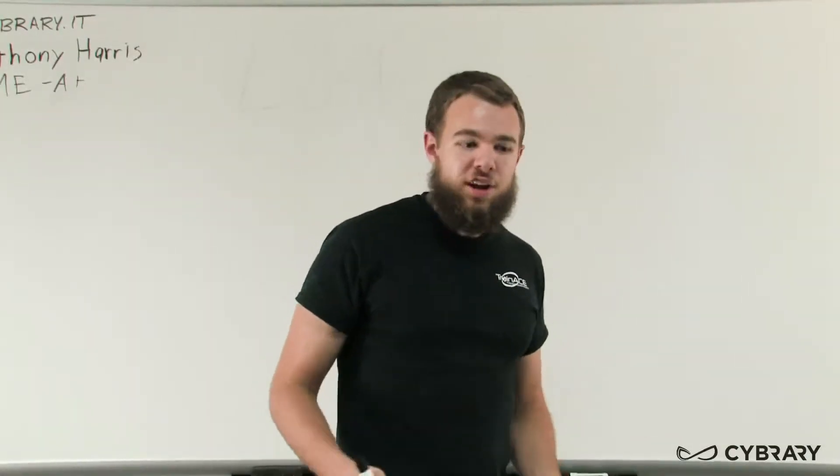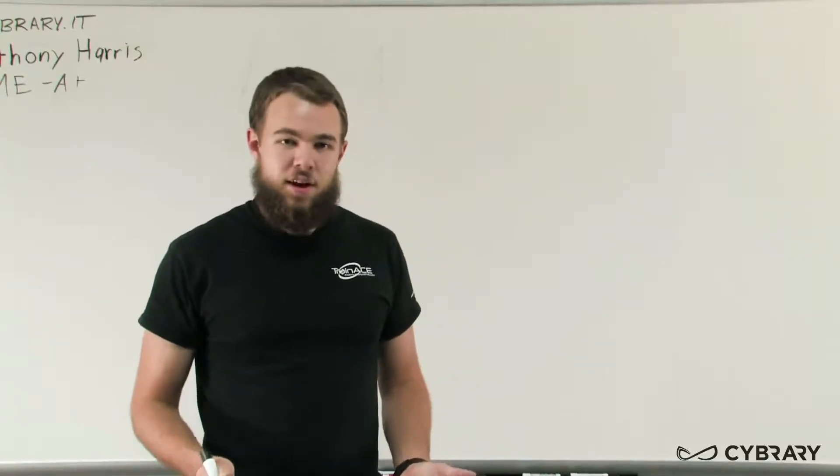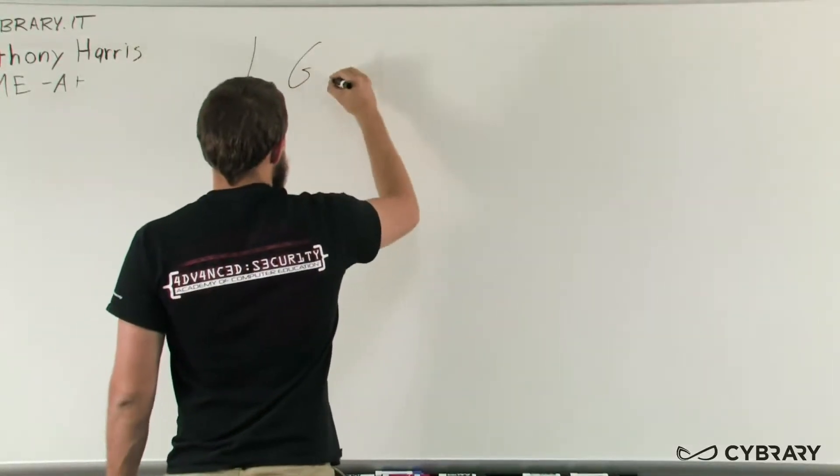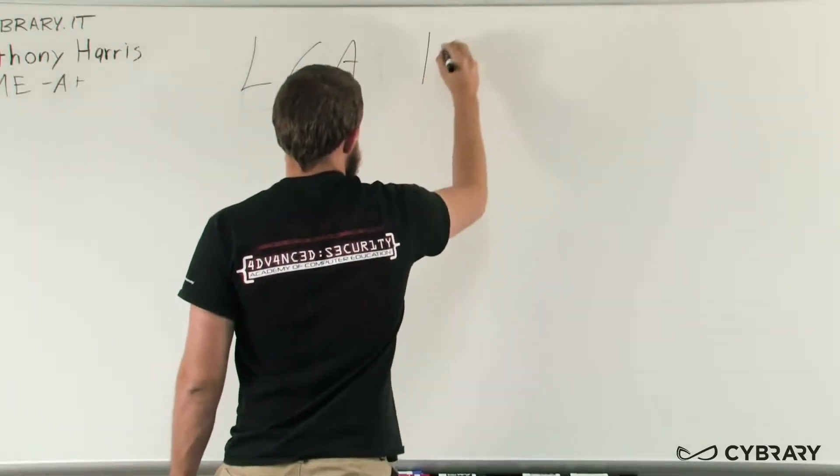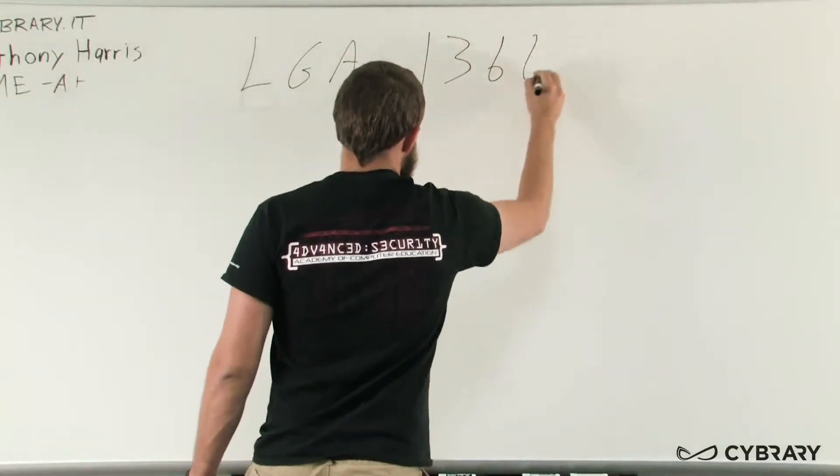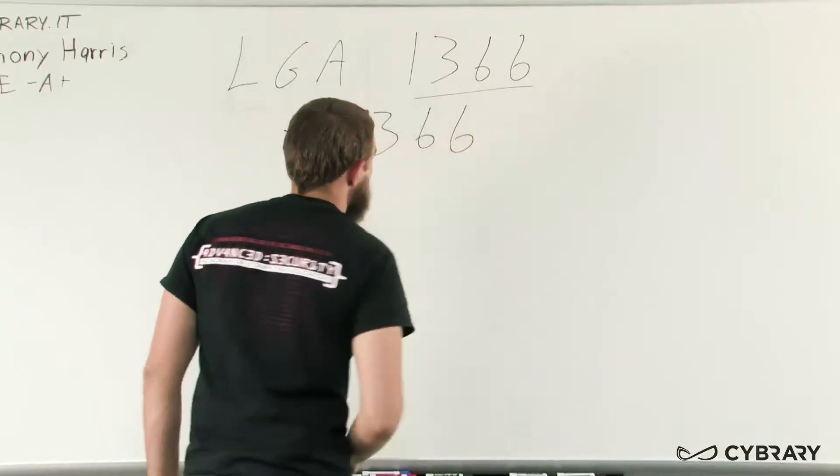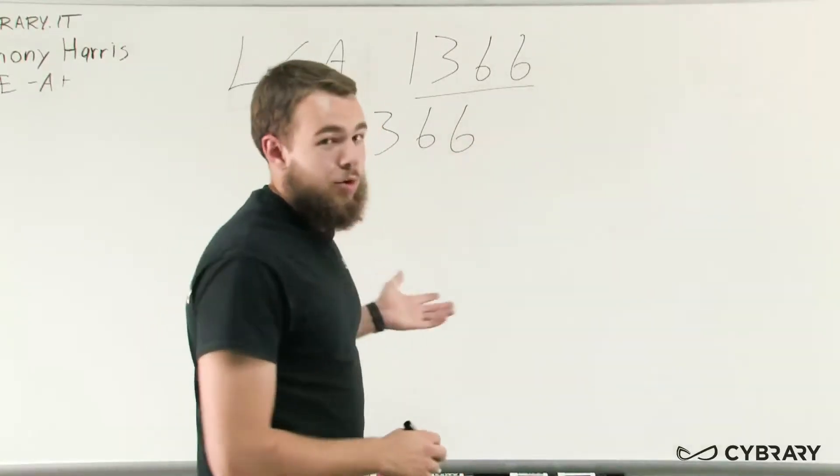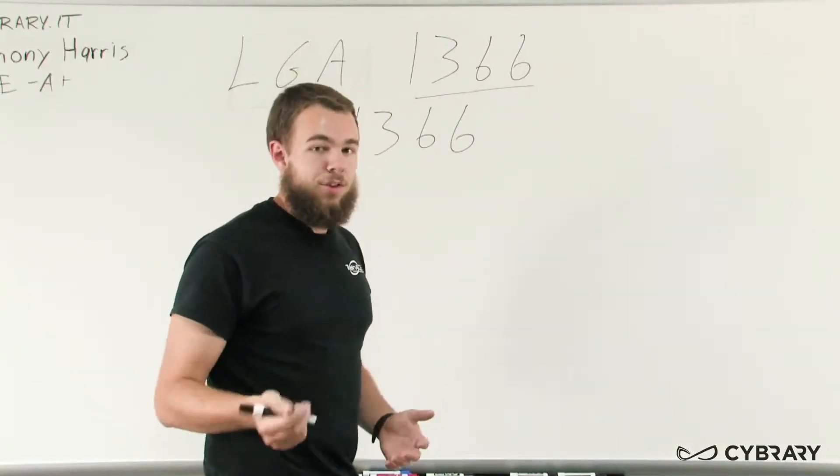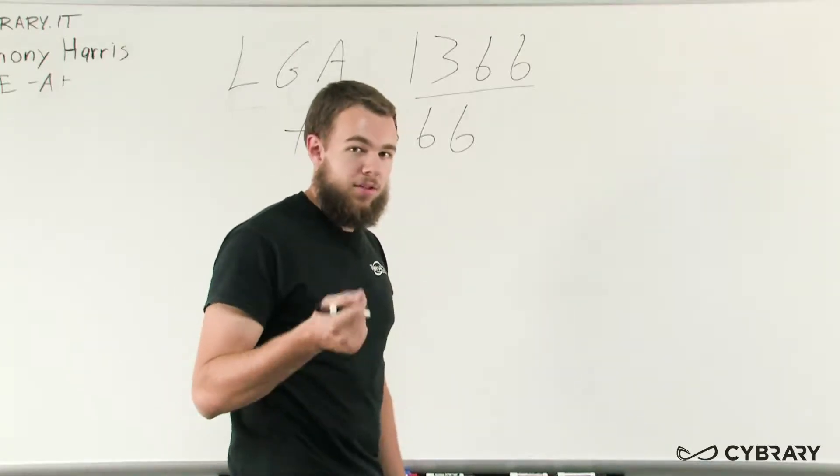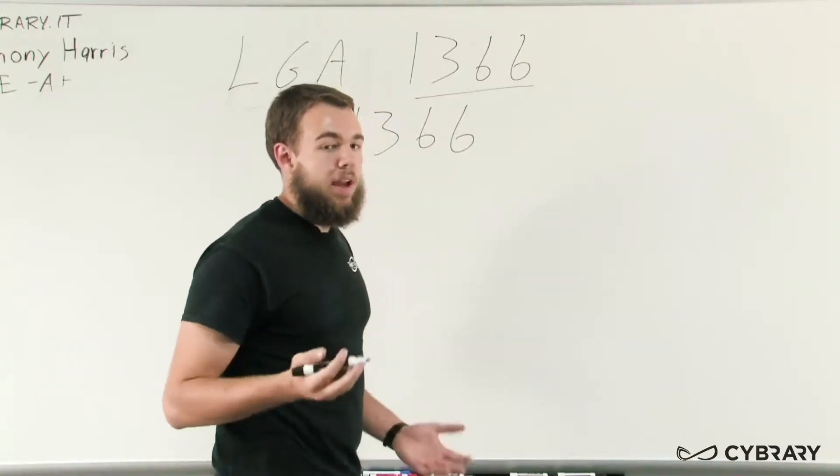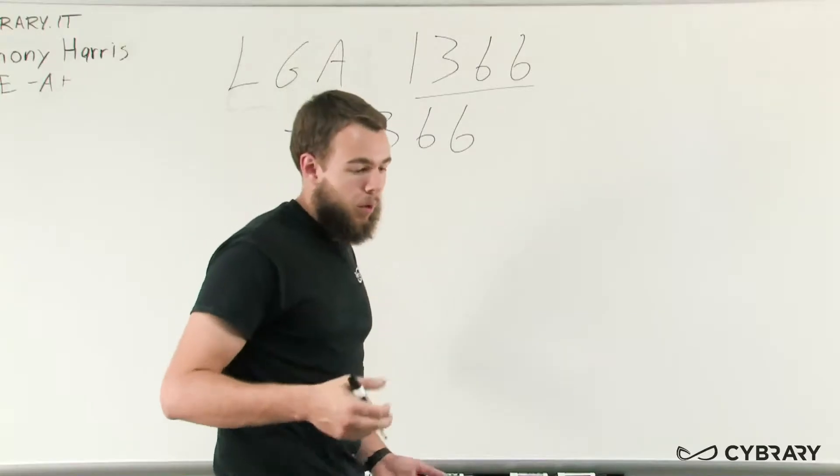Next up we have our LGA-1366 socket similar to the previous LGA. The LGA-1366 socket has in its name 1366 pins. Again it's a LAN grid array so that means that the pins for this socket are on the board itself rather than the CPU and we need to be careful when we're installing the CPU onto the board.